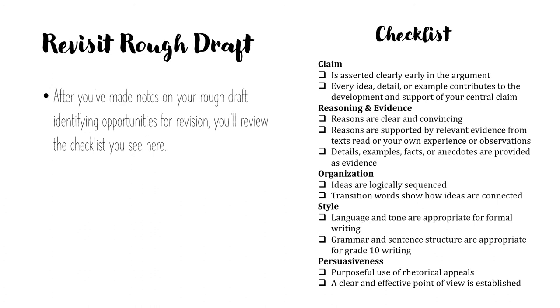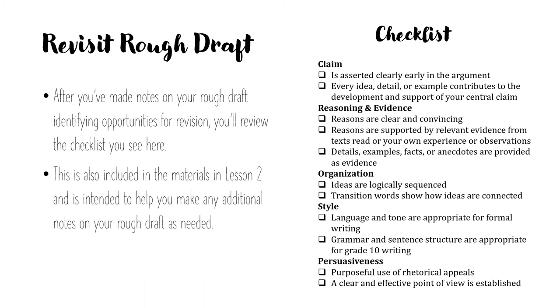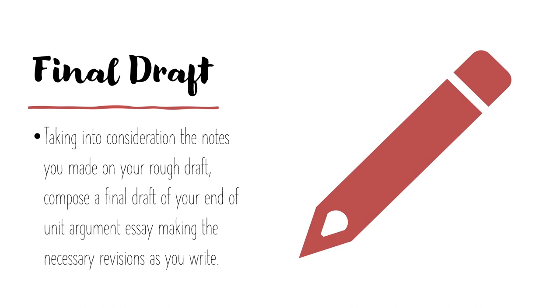After you've made notes on your rough draft in lesson two and identified opportunities for revision, you'll review the checklist included in the materials — intended to help you make any additional notes on your rough draft as needed. Then, taking into consideration the notes you made, you'll compose a final draft of your end-of-unit argument essay, making the necessary revisions as you write. That was your end-of-unit writing task, so congratulations on completing Unit 4. I'll see you again next week for our last week of lessons.